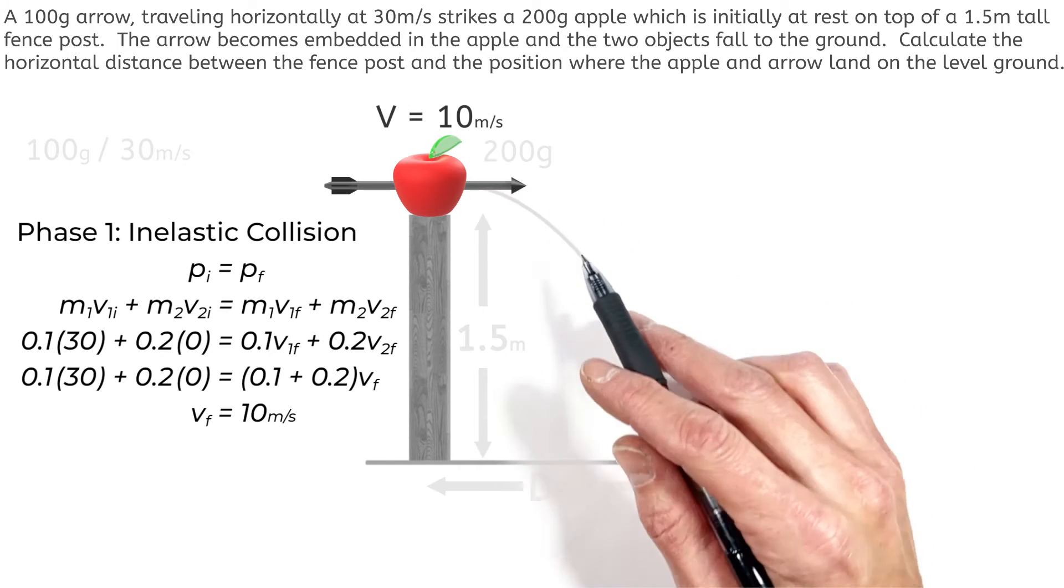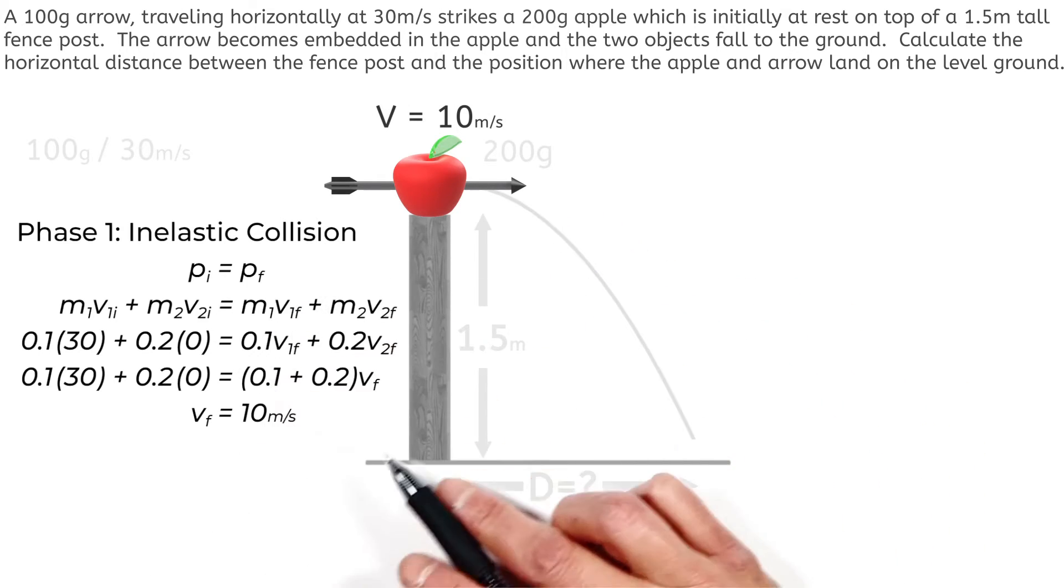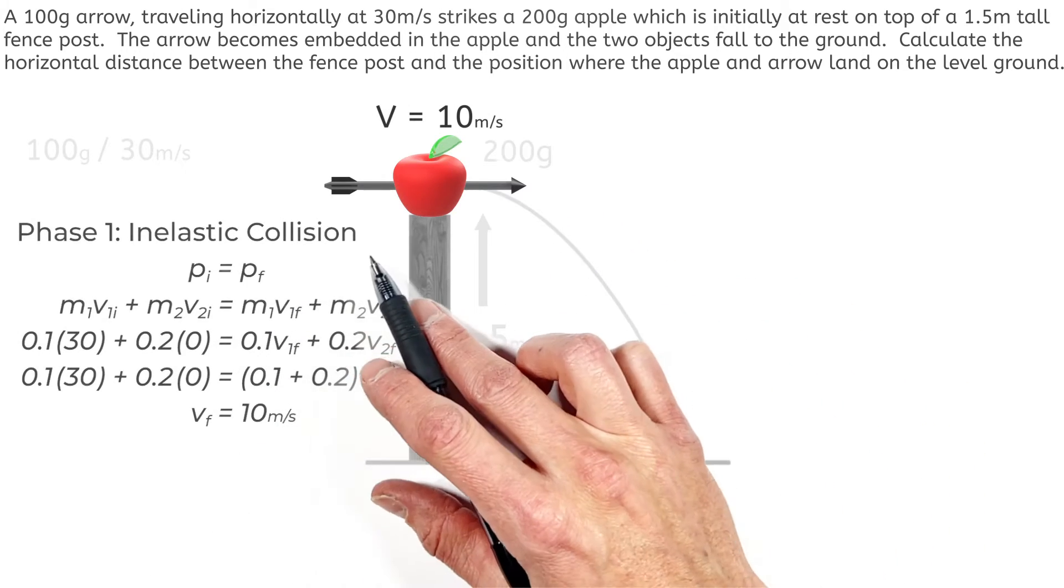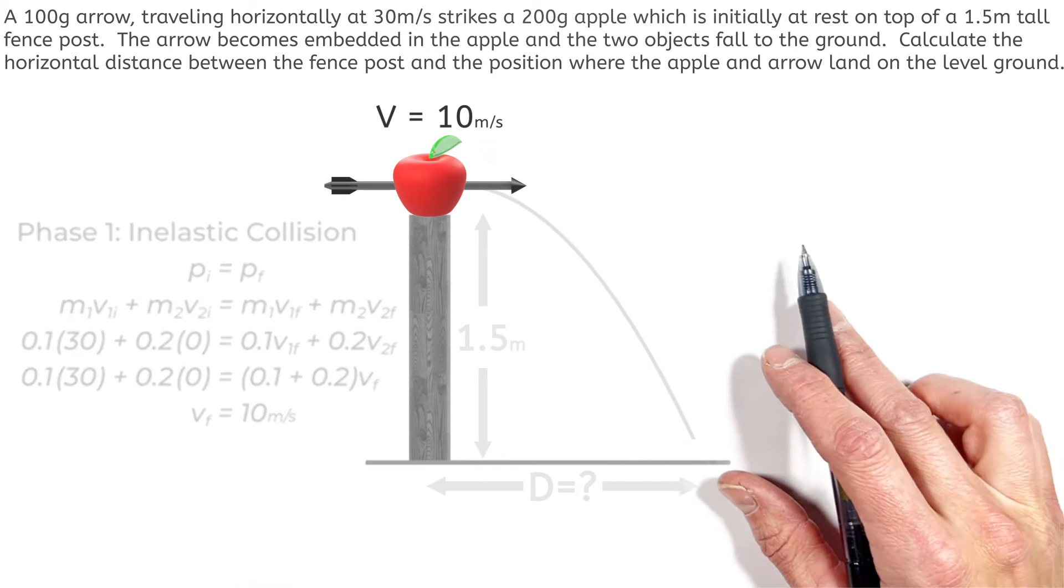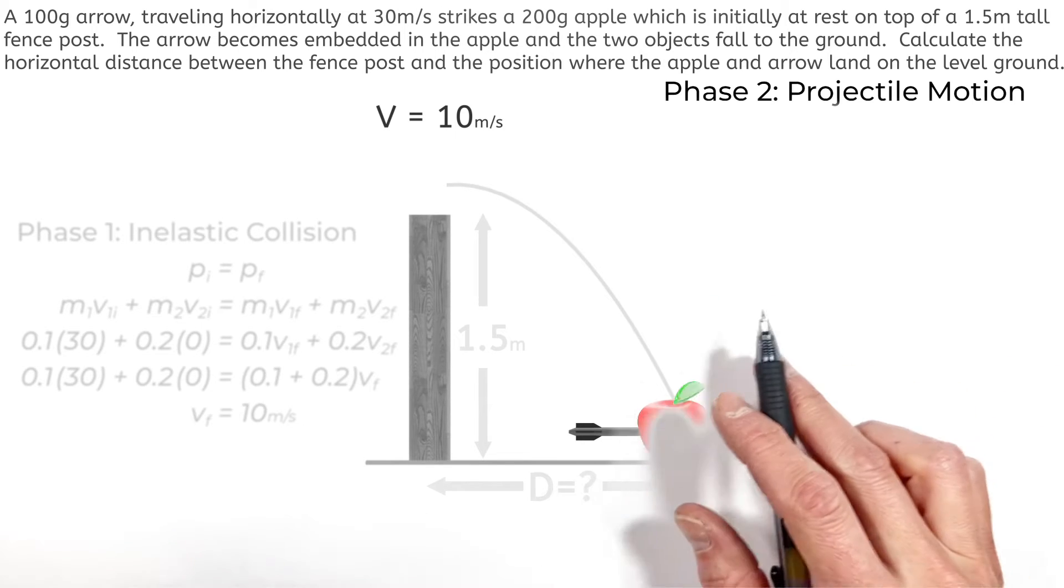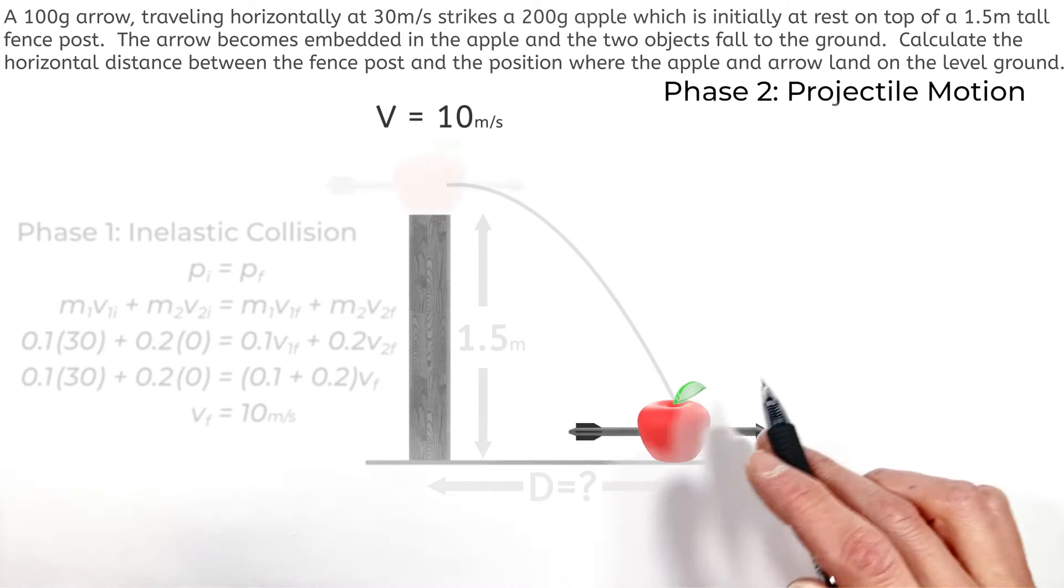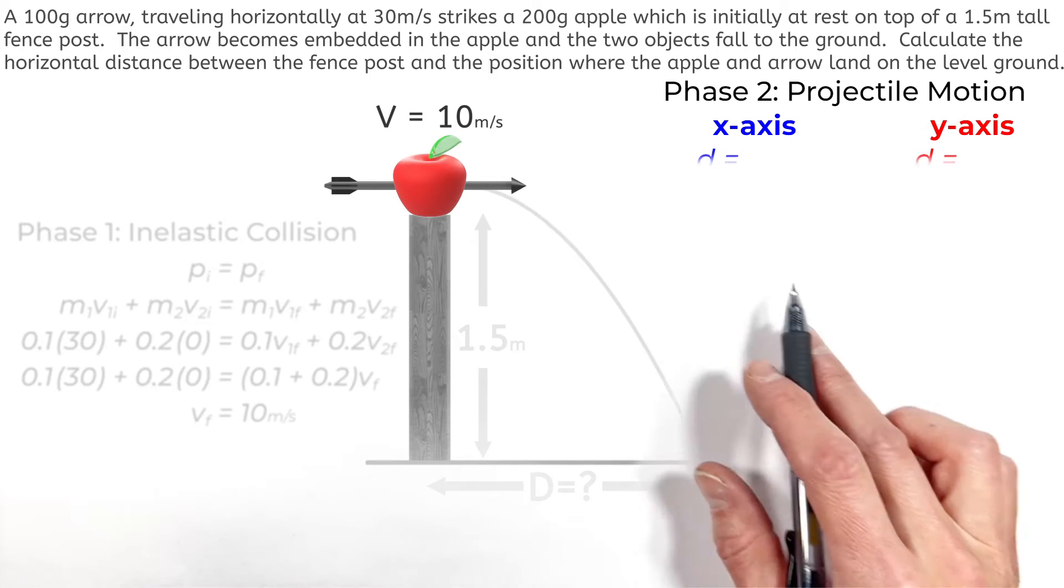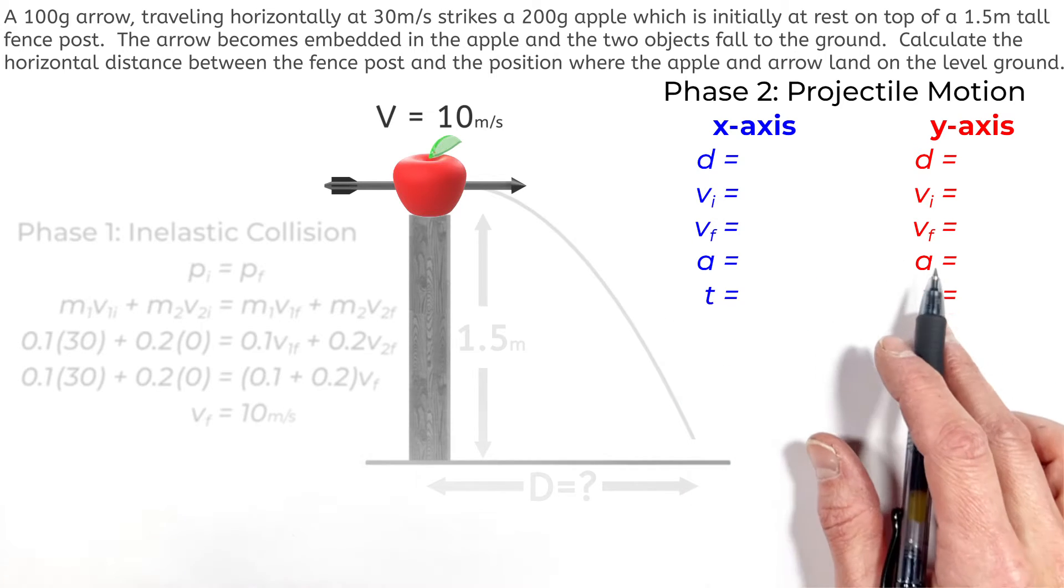Now typically, I find people struggle the most in this problem in understanding how a result over here for the first phase of this motion feeds into the second phase of motion, or the projectile motion part of this problem. Now the best way I find to structure projectile motion is to set up a table showing all the kinematic variables within each axis.